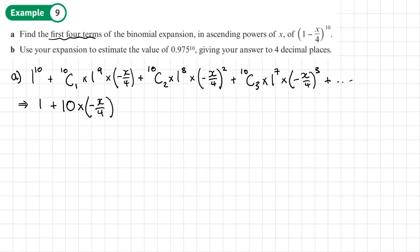Now the next term, 10C2 is 45, so we'll have plus 45, that's going to get times by one. So you might want to write that in and then times by (-X/4)^2 will be positive X^2 over 16. So I'll just write X^2 over 16 like this and this one more term.